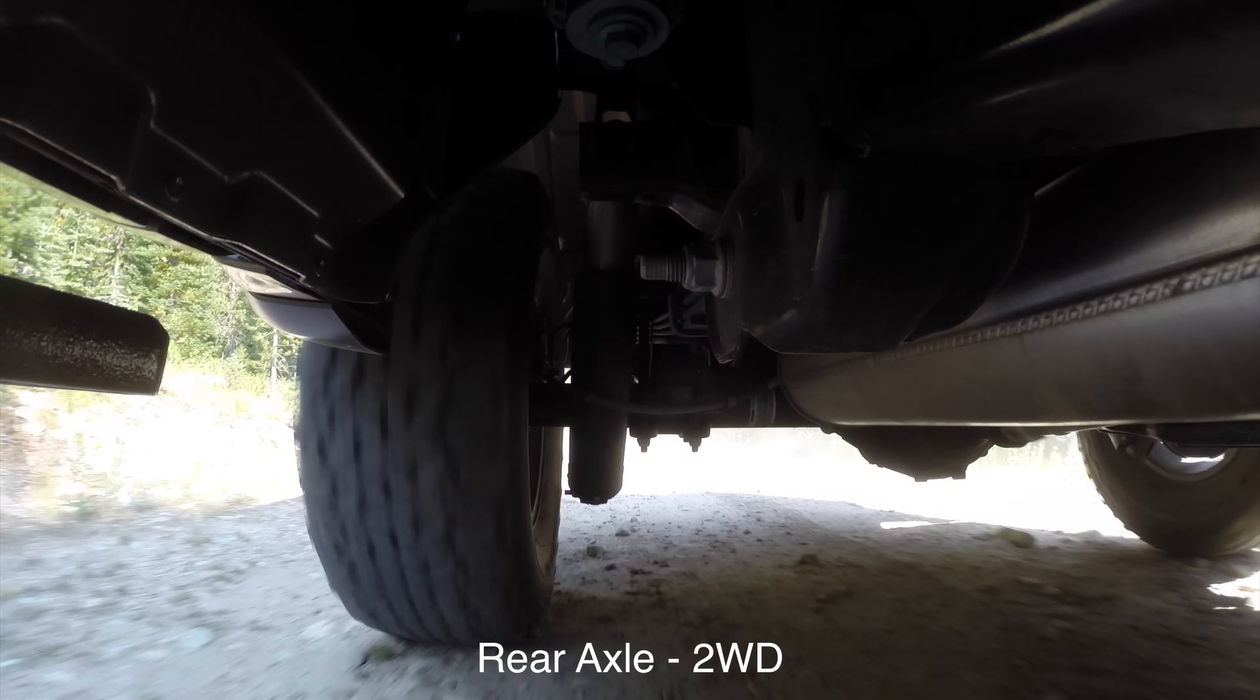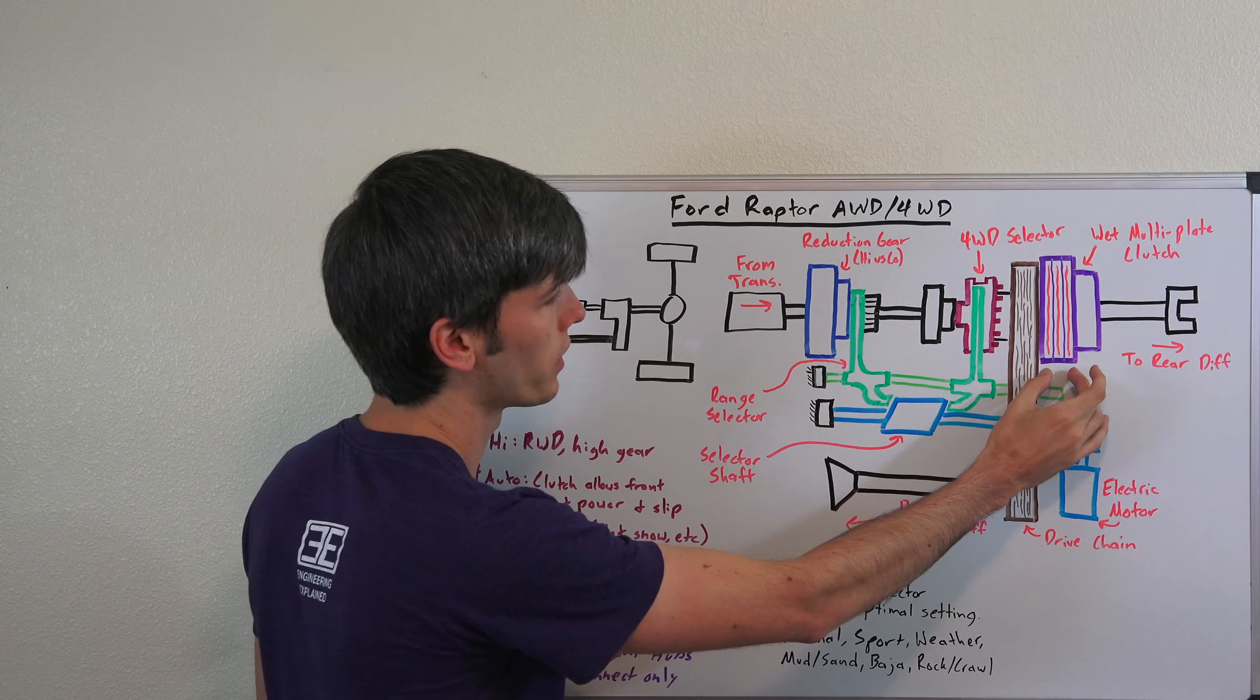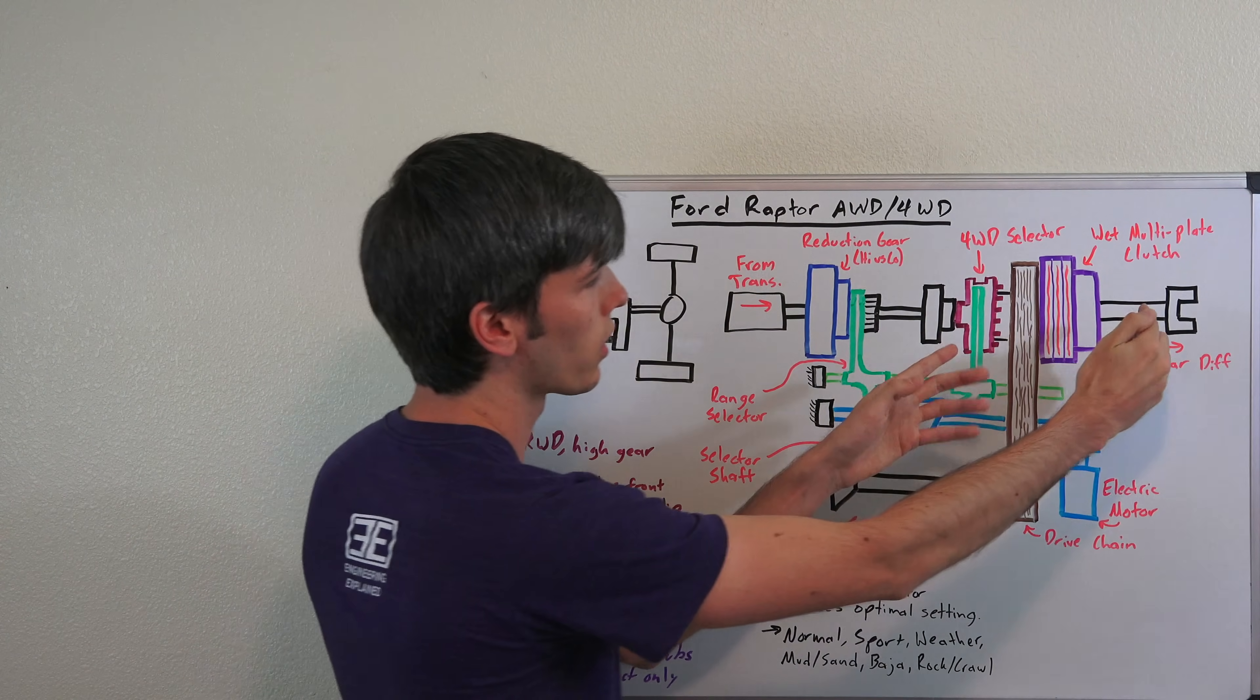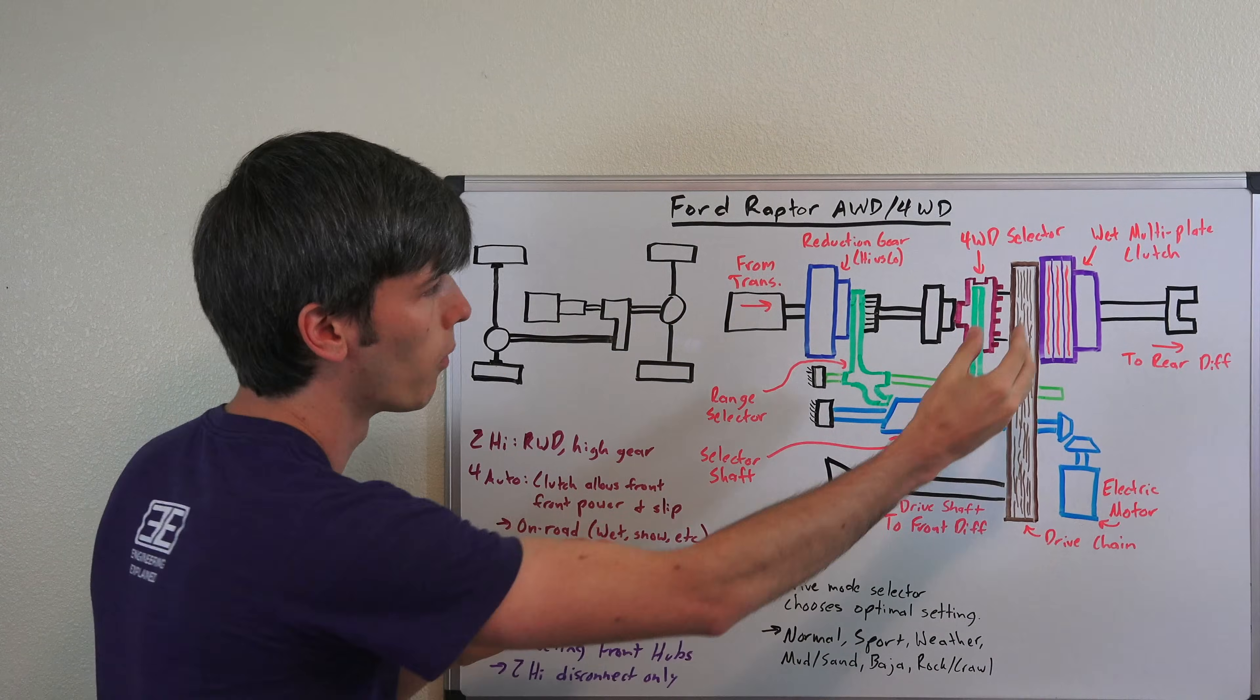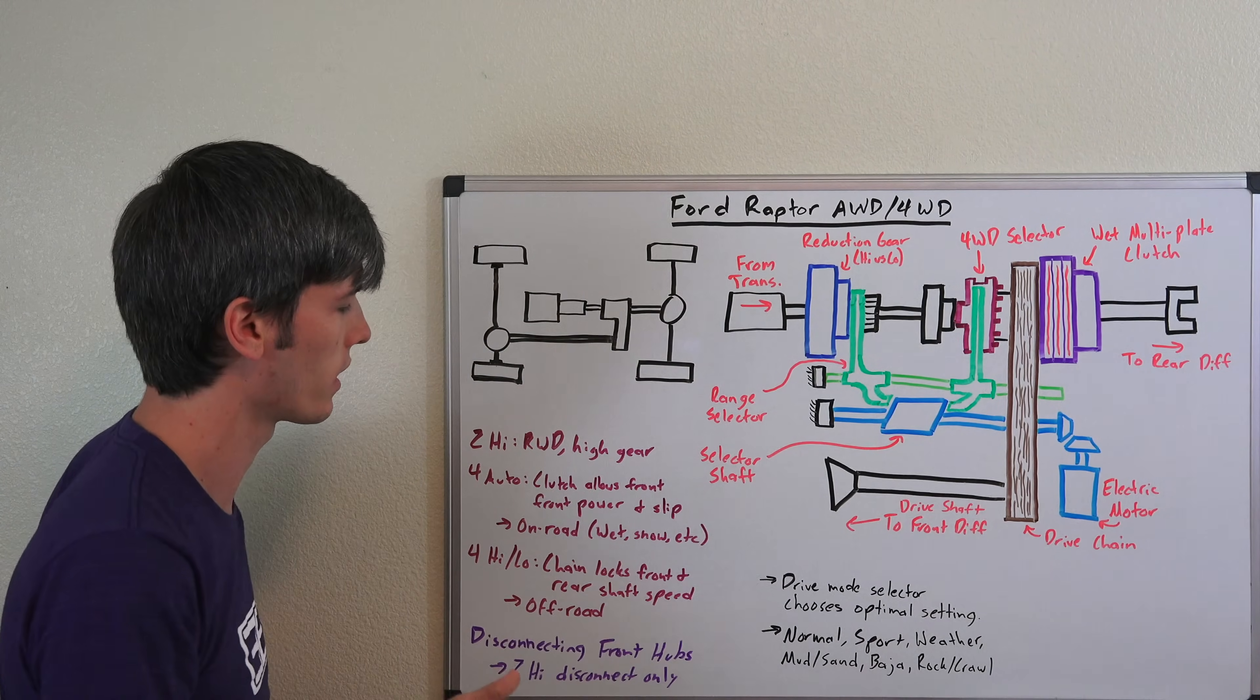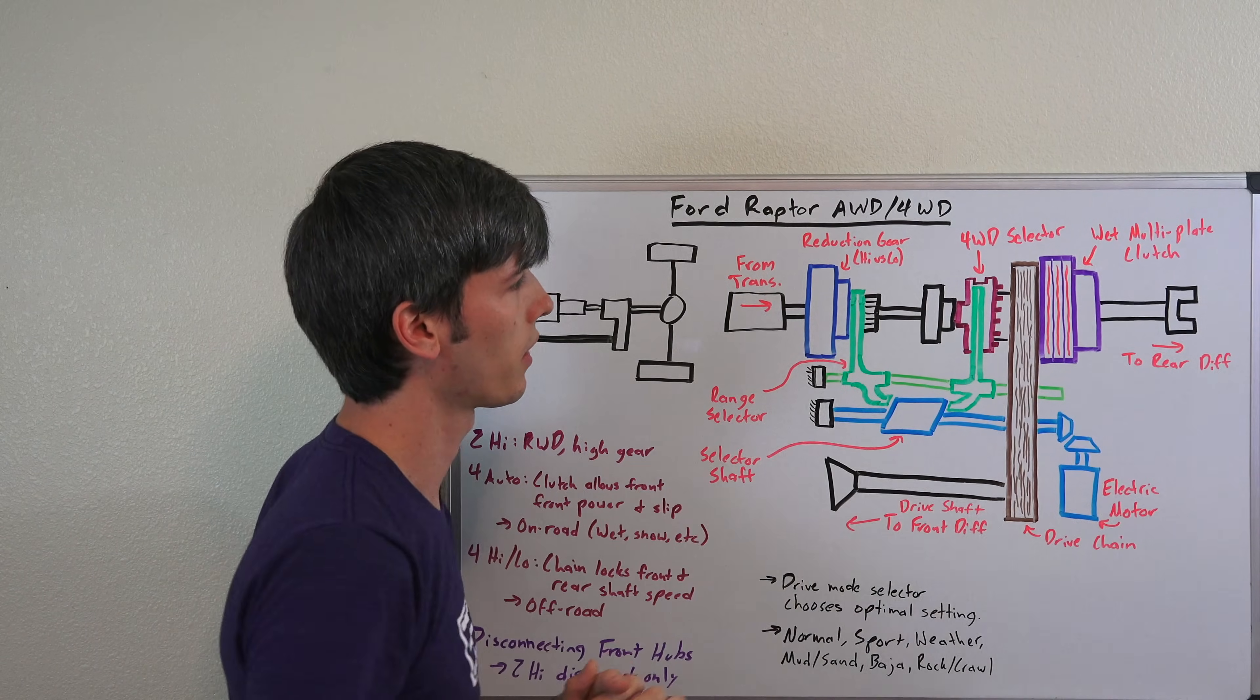Now once you put it into four auto what it's going to do is connect those front hubs so now your wheels can be driven on the front and it's going to start to lock up this clutch pack when needed. So in scenarios where you have slip or where you're not basically in a steady state it's going to apply pressure to this clutch pack so that now you're connecting this drive shaft and this drive shaft through this clutch pack through this chain. The more pressure you apply obviously the more lock up you get but because it's all going through this clutch pack and not a locked chain it does allow for slip. So the advantage of this is that you can use this on road, you can drive in the wet, in the snow, things like that on pavement and you won't have binding of your axles because you do allow for slip within that clutch pack.